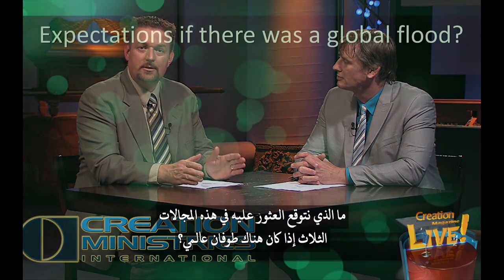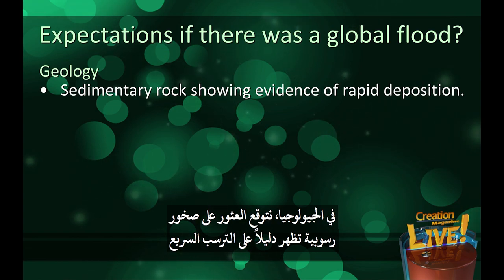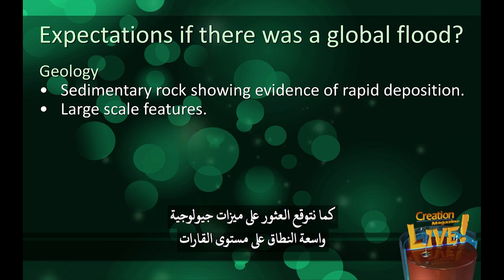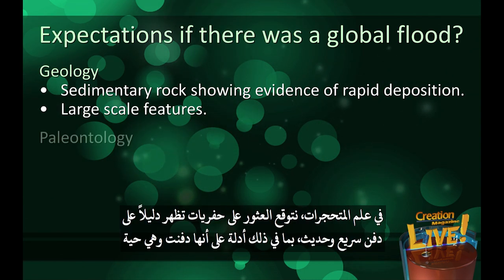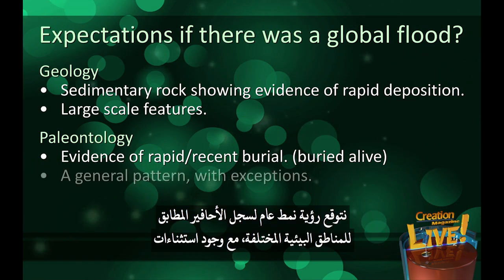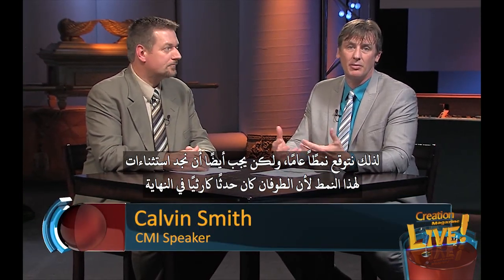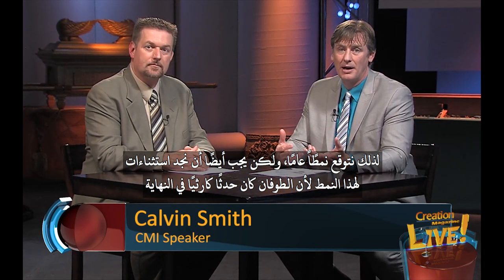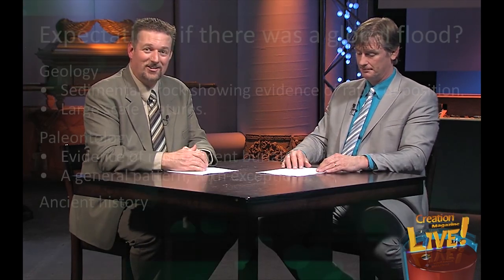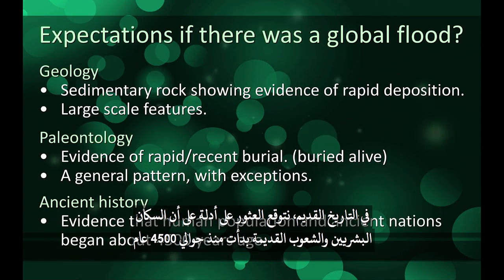What would we expect to find in these three areas if there was a global flood? In geology, we would expect to find sedimentary rock showing evidence of rapid deposition, and also large-scale, continent-wide geologic features. In paleontology, we would expect to find fossils showing evidence of rapid and recent burial — evidence they were buried alive — and a general pattern to the fossil record matching different ecological areas, but with exceptions since the flood was catastrophic. In ancient history, we would expect to find evidence that human population and ancient nations began about 4500 years ago.